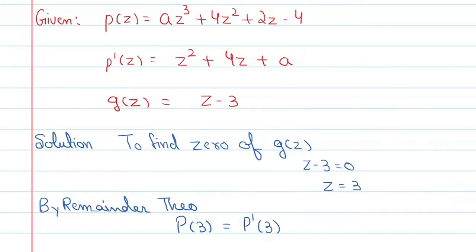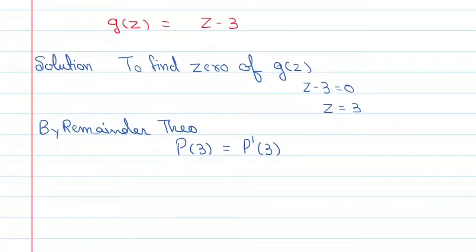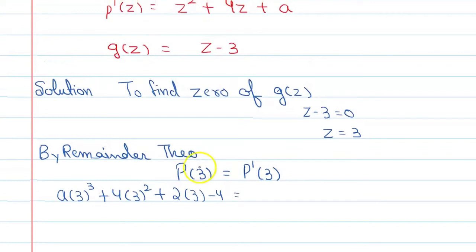Now we put the values. So p(3), p(3) value will be a(3)³ + 4(3)² + 2(3) - 4. Similarly, when we put 3 value in p'(z), the value will be 3² + 4(3) + a.